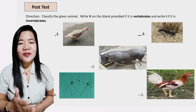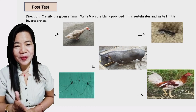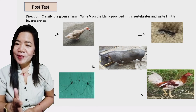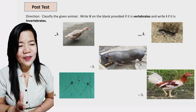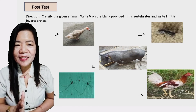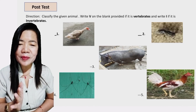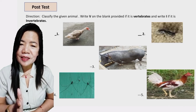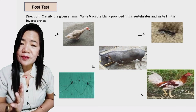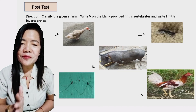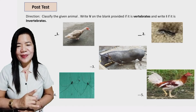Class, to evaluate if you really understand our lesson about vertebrates and invertebrates, answer the following questions. Direction: Classify the given animal. Write V on the blank provided if it is a vertebrate, and write I if it is an invertebrate. You have 10 seconds to answer. Go!